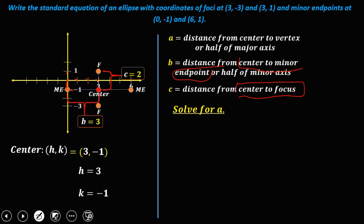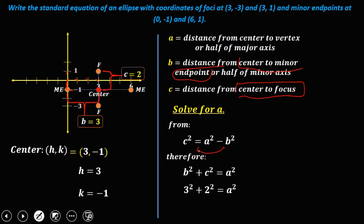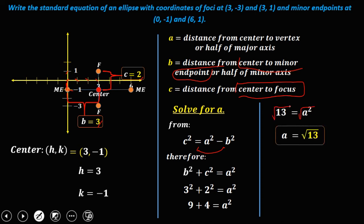To solve for a, use the formula c² = a² - b², rearranged to a² = b² + c². Substituting: a² = 3² + 2² = 9 + 4 = 13. Taking the square root, a = √13.